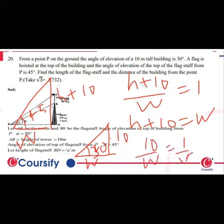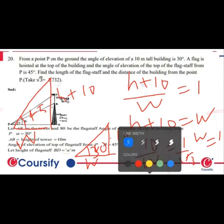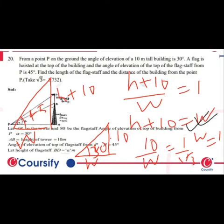The tan 30° value is 1 over root 3. So the W value equals 10 root 3. Now, W value is 10 root 3 and we will put this value into the other equation. So here is the height.